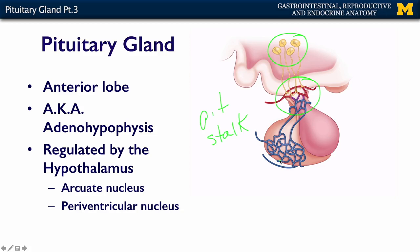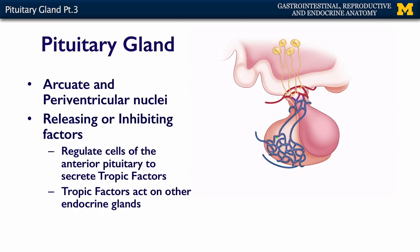A portal system, which you were probably introduced to in the circulatory MOOC, is where you go from capillary bed to capillary bed before you go back into the larger circulation of the body. These neurons secrete their products into a capillary bed that then goes to the anterior pituitary. The arcuate and paraventricular nuclei of the hypothalamus regulate the anterior pituitary by releasing factors called either releasing or inhibiting factors, which act on cells in the anterior pituitary. The anterior pituitary then releases tropic factors that go into circulation and influence other endocrine organs throughout the body.